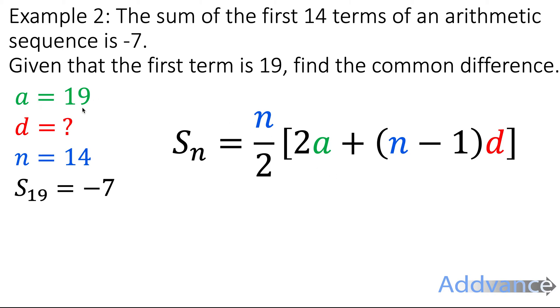Then it says the first term is 19. The difference is, we don't know. The number of terms is 14. And the sum of the first 19 terms, sorry, the sum of the first 14 terms, actually 14, is minus 7.